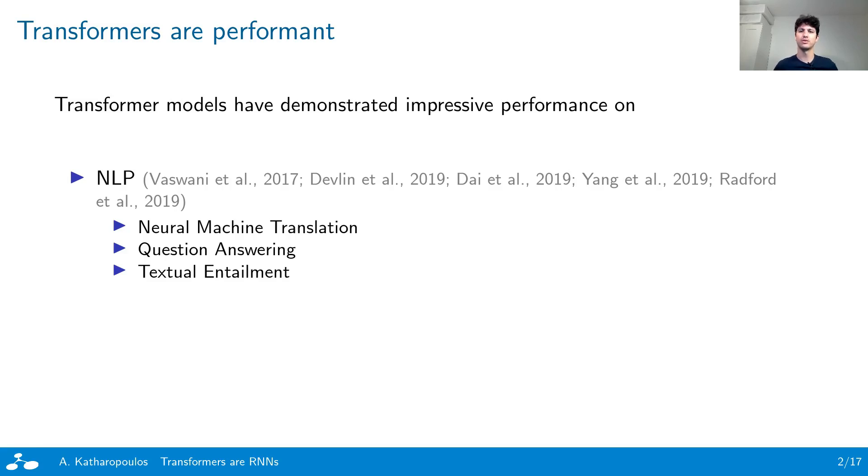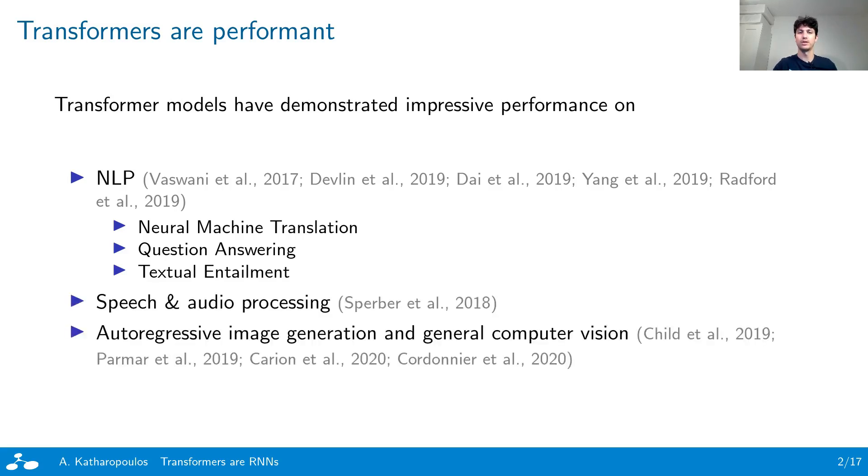Transformers were initially designed for natural language processing tasks and have proven successful on complicated tasks such as question answering and textual entailment. More recently they have been employed on other sequence modeling tasks such as speech processing and image generation, and even on traditional computer vision tasks such as object detection.